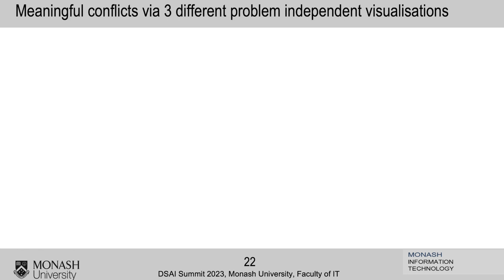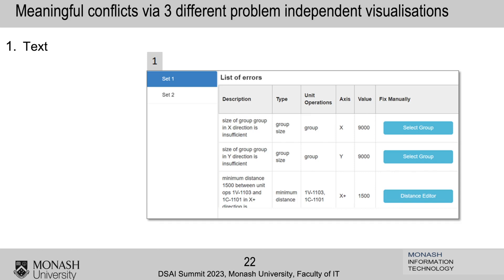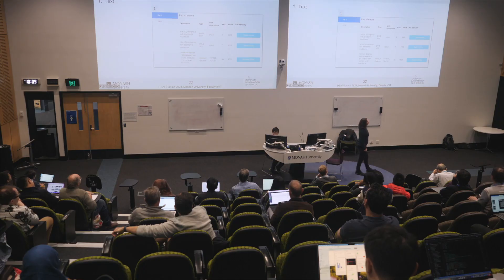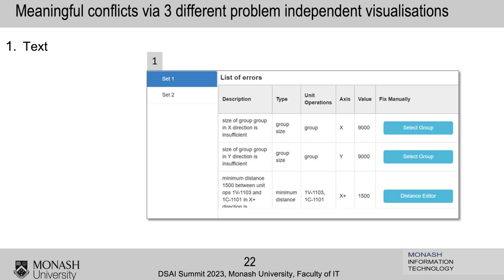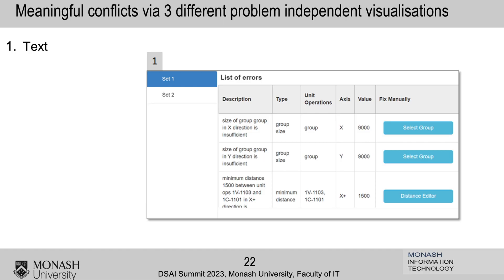We have three different problem-independent visualizations. The first one is a text tool. There are two sets — set one and set two — the different MUSes, each showing different constraints. It gives you the type (the high-level type of constraint), which elements in the plant layout it's talking about, and what the problem is — for example, that a minimum distance constraint is the issue. You can click through, see the values, et cetera.